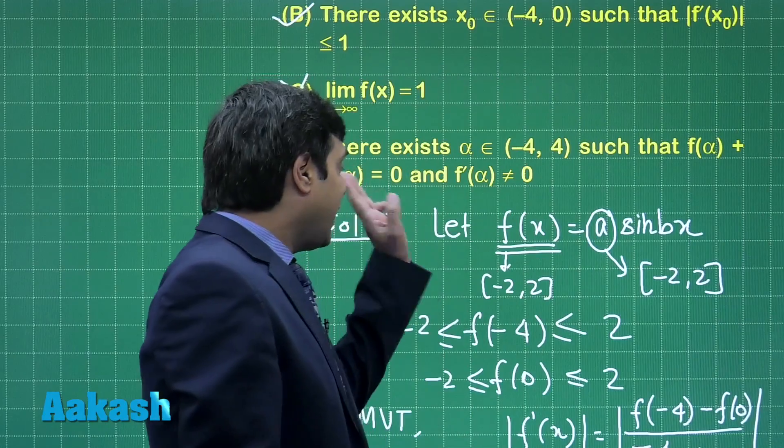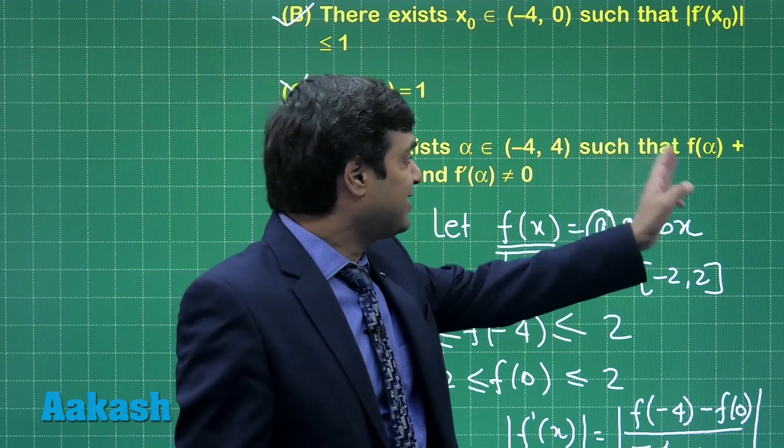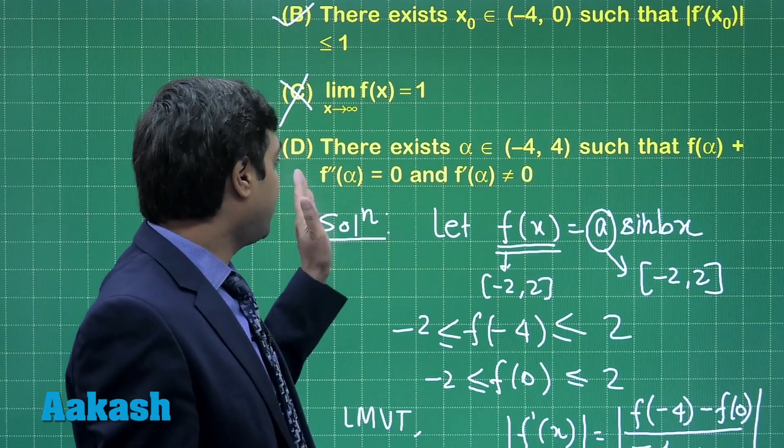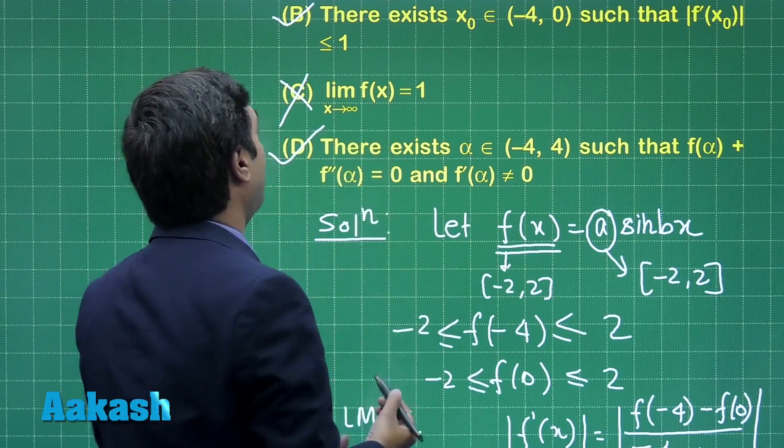Looking at the fourth option which says there exists α in the interval minus 4 to 4 such that f(α) plus f''(α) is 0 and f'(α) is not 0 is also correct.